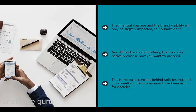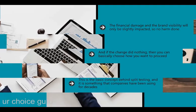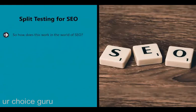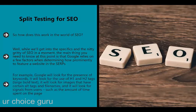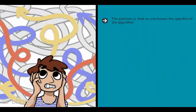This is the basic concept behind split testing, something companies have been using for decades. In SEO, Google relies on several factors when determining how prominently to feature a website in the SERPs - for example, the presence of keywords, the use of H1 and H2 tags, images with certain alt tags and file names, and signals from users such as the amount of time spent on the page.